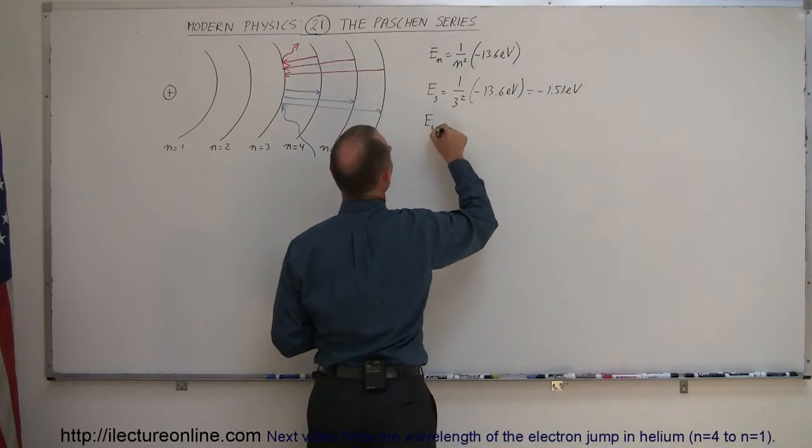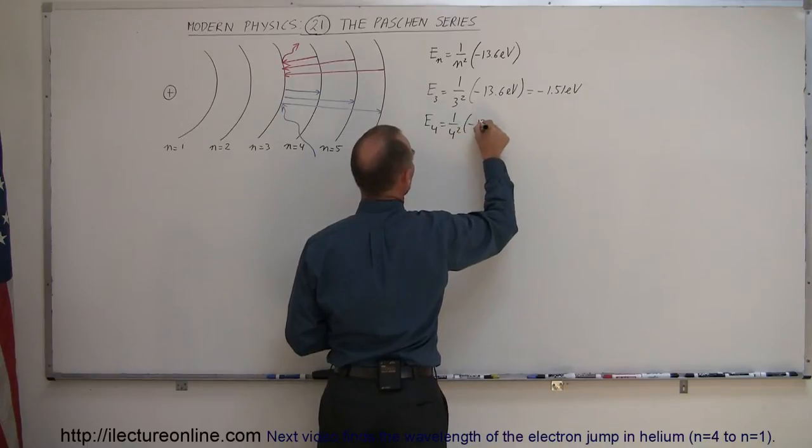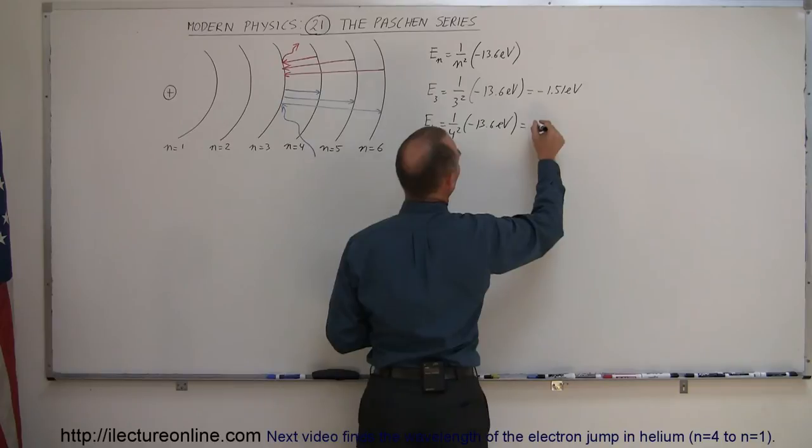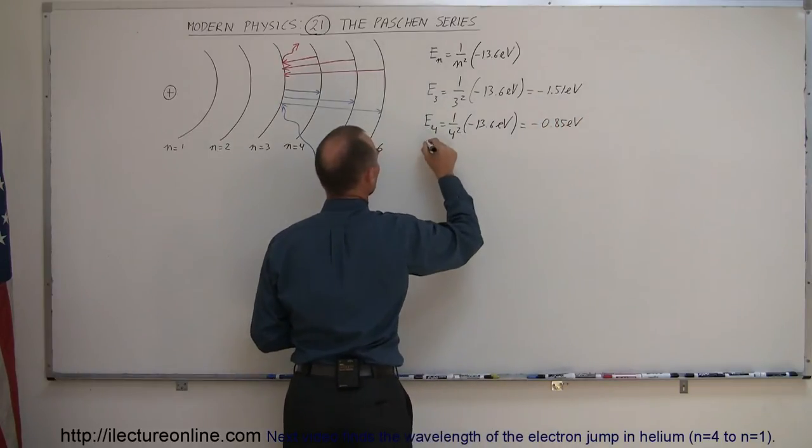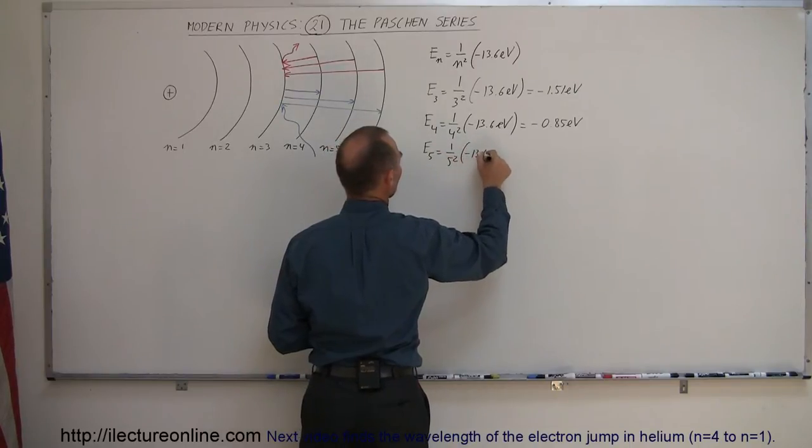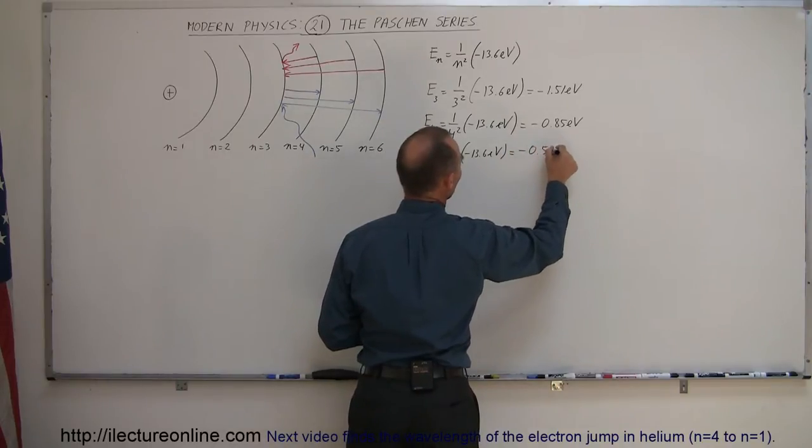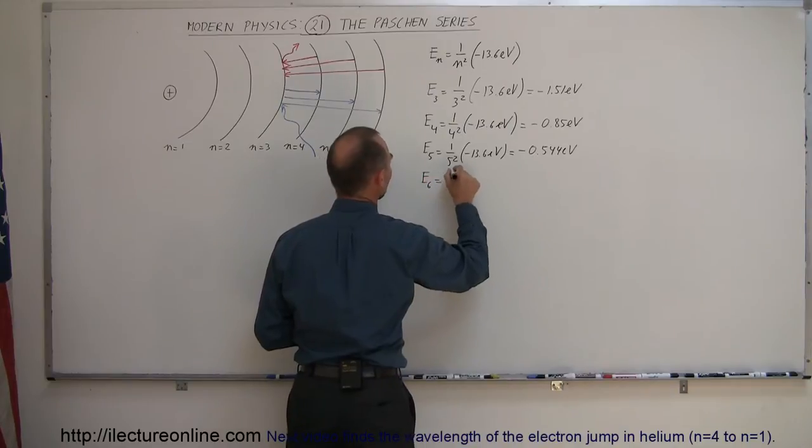The energy to the fourth level is equal to 1 over 4 squared times minus 13.6 electron volts, which is equal to minus 0.85 electron volts. The energy to the fifth level is equal to 1 over 5 squared times minus 13.6 electron volts, and I believe that was minus 0.544 electron volts.